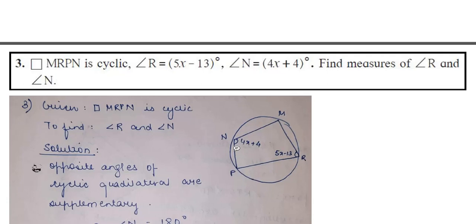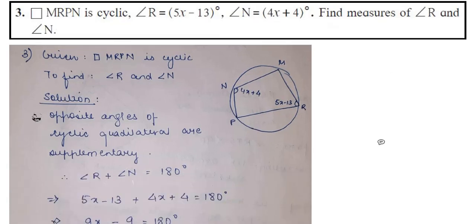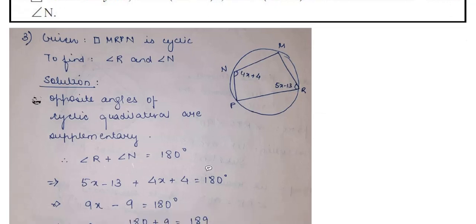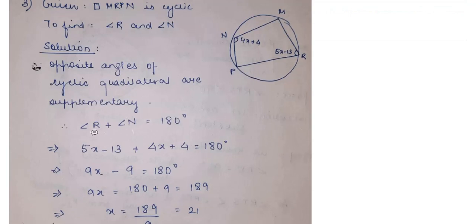This is question number 3 of practice set 3.4. Pause the video, write down the question. You are again given a cyclic quadrilateral. What is important is, this name order you should not change. M, R, P, N. So you will write in order: M, then R, then P, then N. Angle R is given as 5X minus 13. Angle N is given as 4X plus 4. You have to find both angles. What can you do in such questions?